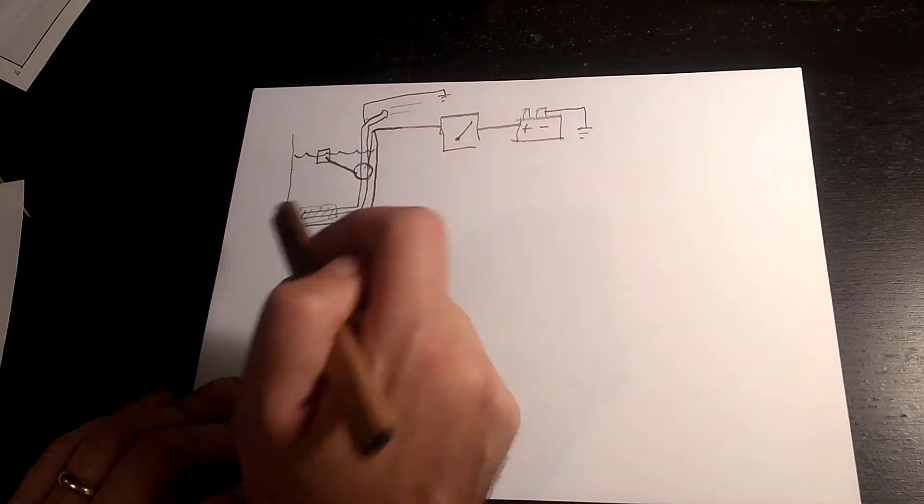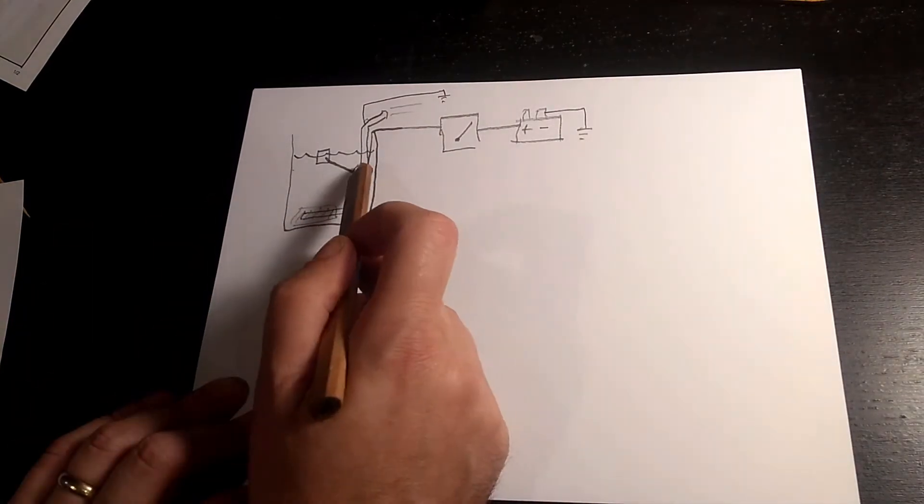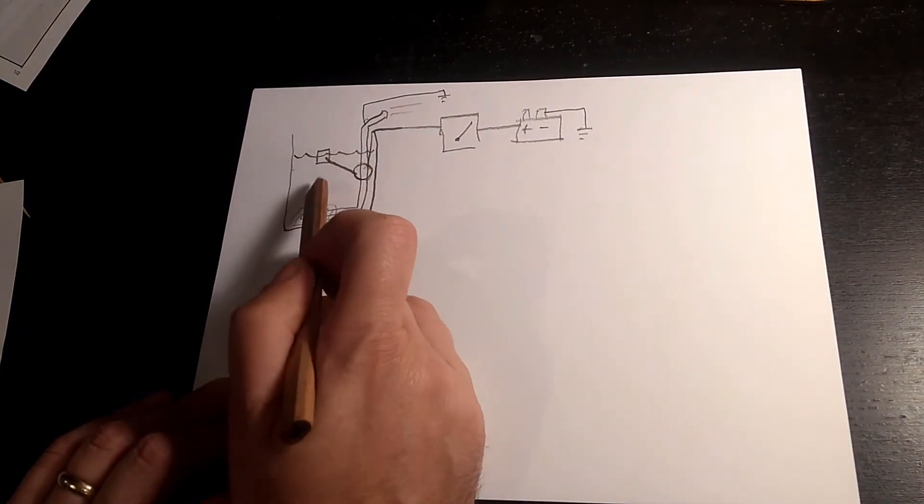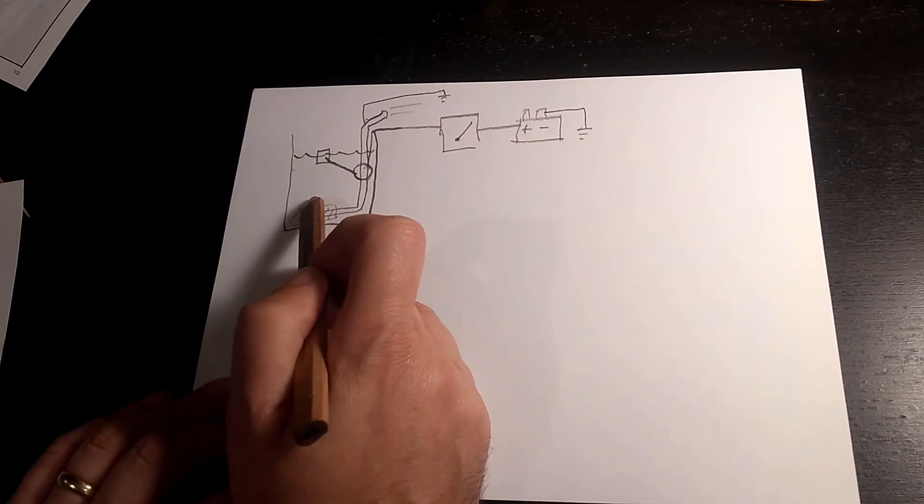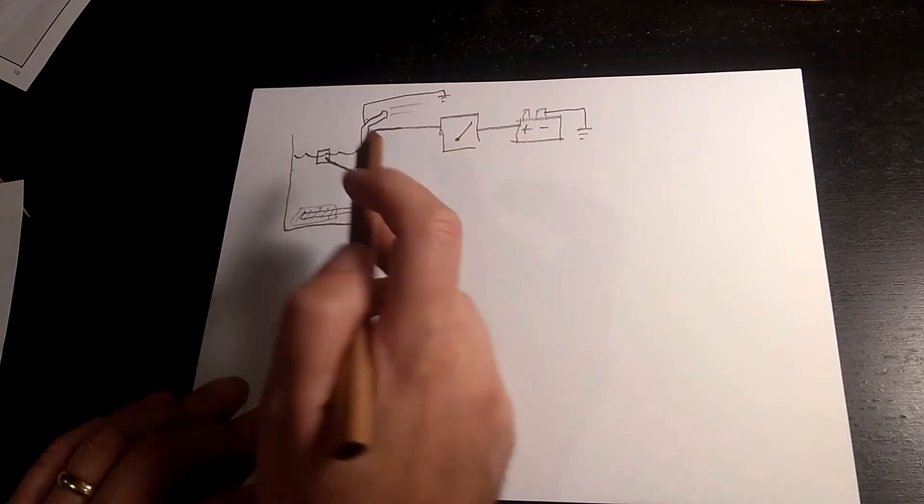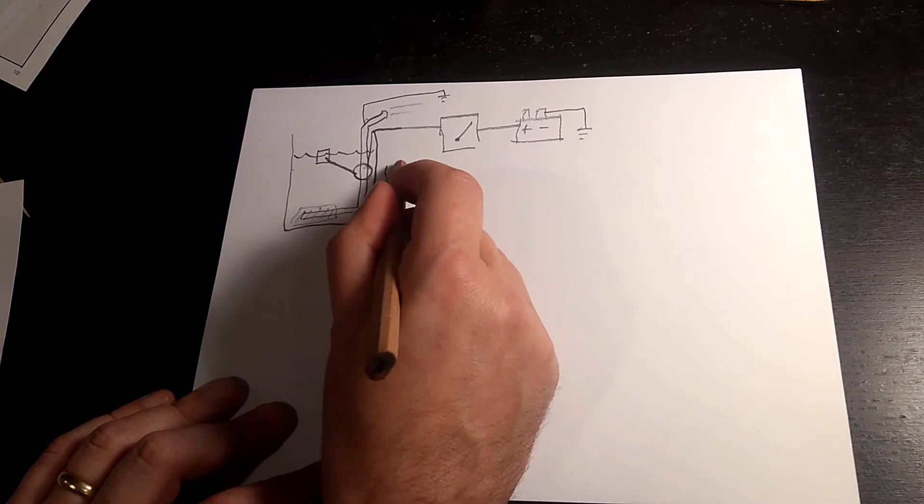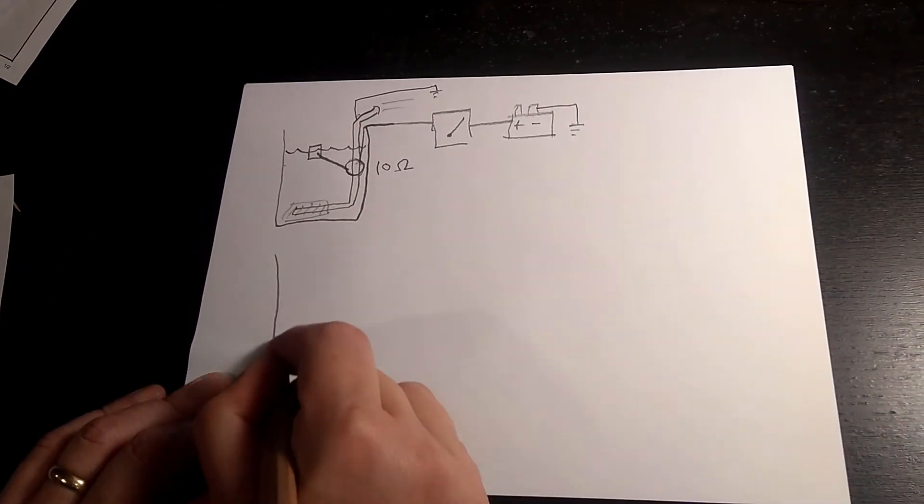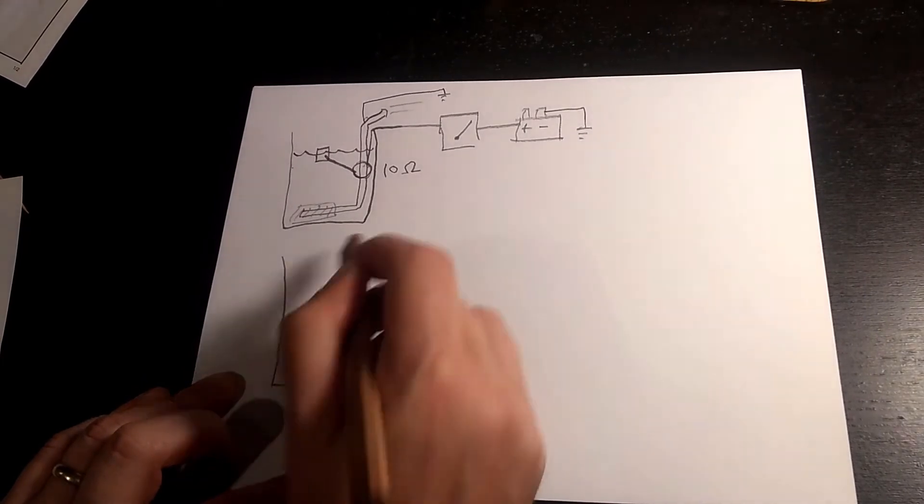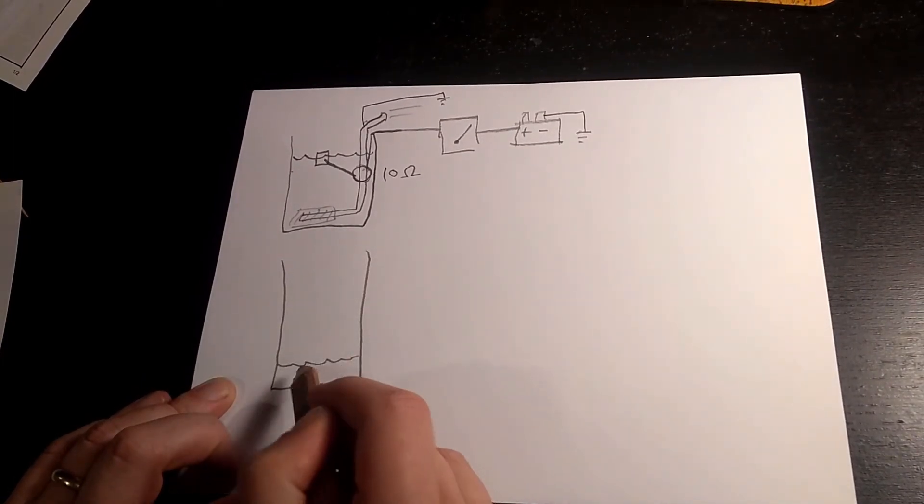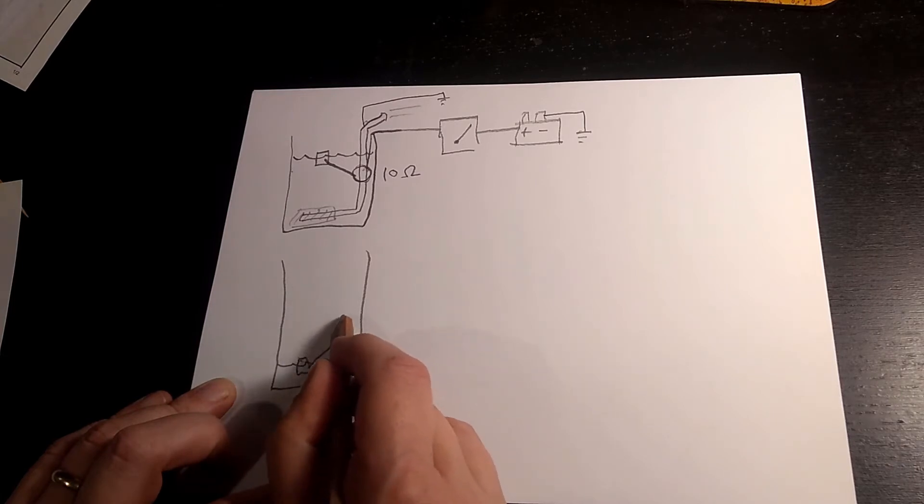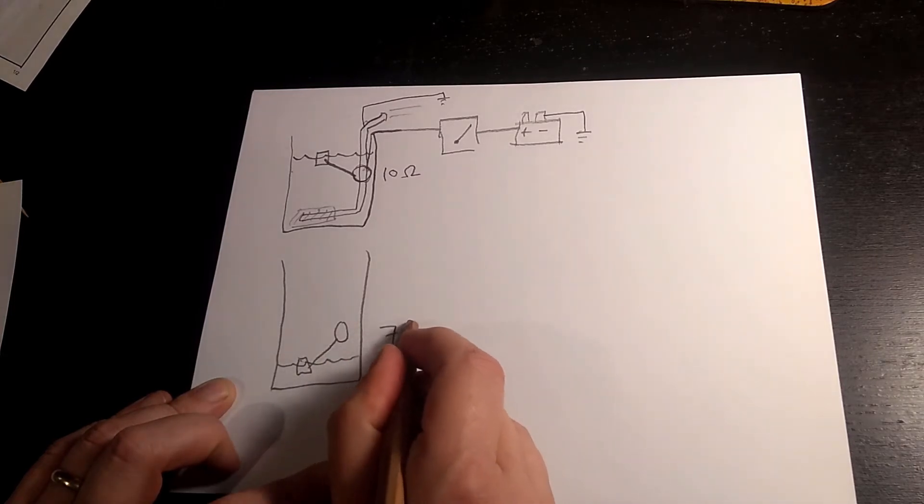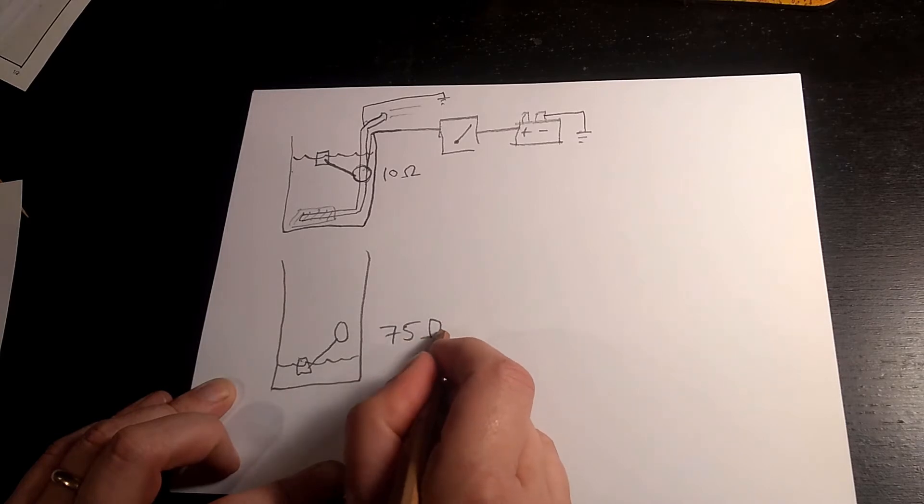What we have is this rheostat changes resistance as this arm moves up and down. So, maybe when it's really high up, we might have, say, 10 ohms of resistance. And when our gas is really low, it floats down here up to the arm, and now we have, say, 75 ohms of resistance.